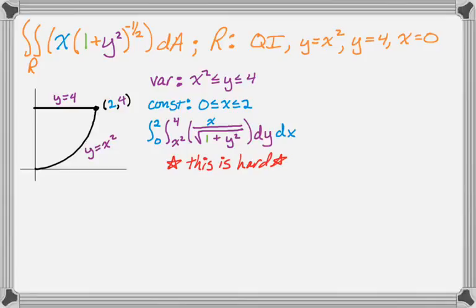So let's take a look. Instead of doing dy dx, we're going to try dx dy. So our x bounds need to be variable. We're going to solve that equation and get x = √y.